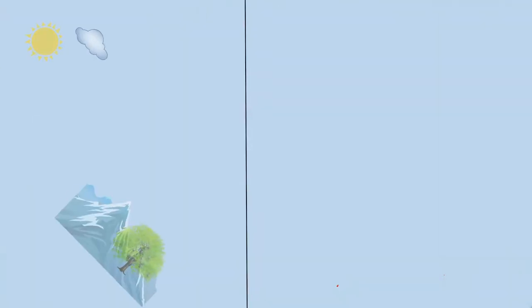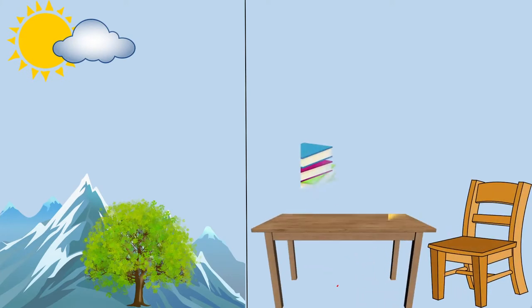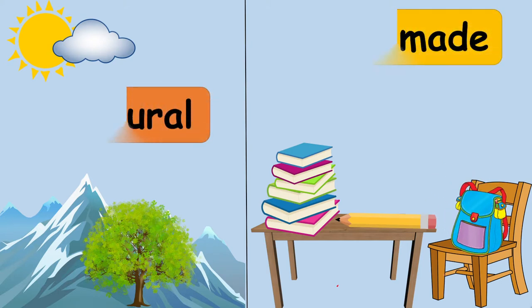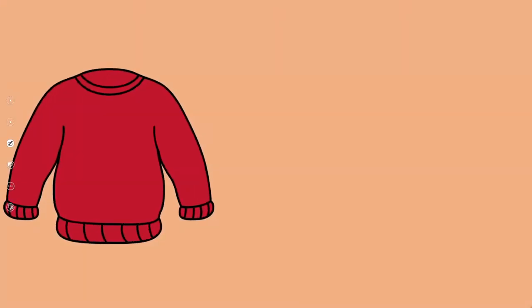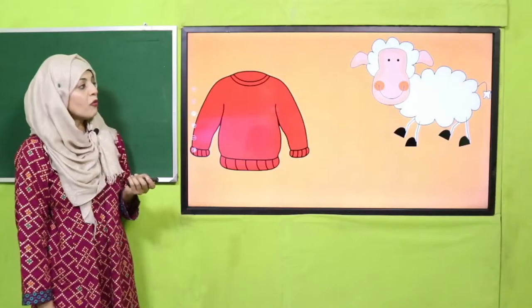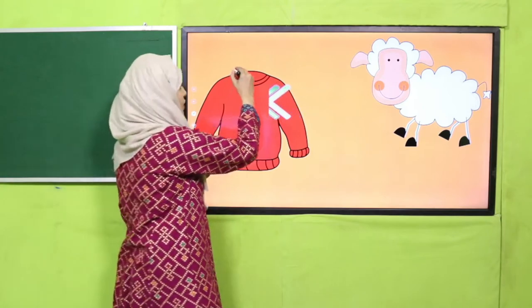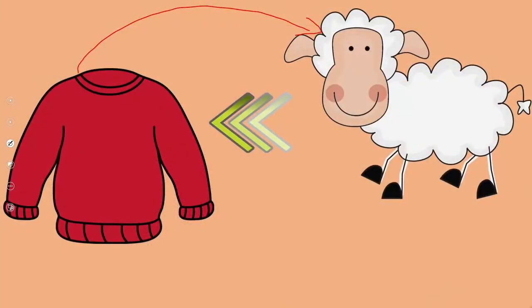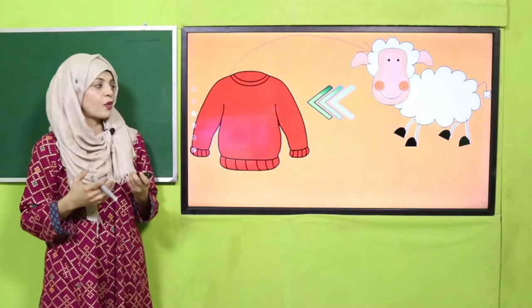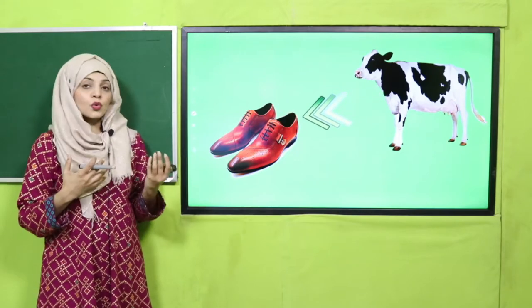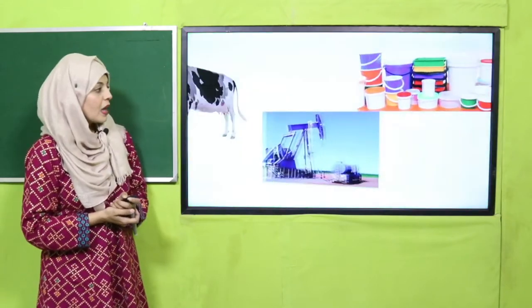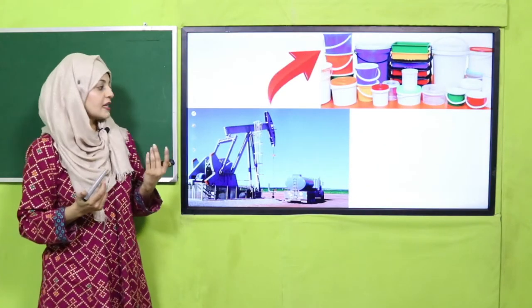On one side there are natural resources and on the other side there are man-made resources. You can see a sweater here — it is made up of wool, so its resource is a sheep, which is natural. Then you can see leather shoes — their resource is animal skin, so leather shoes are made from the skin of animals, and that resource is again natural.